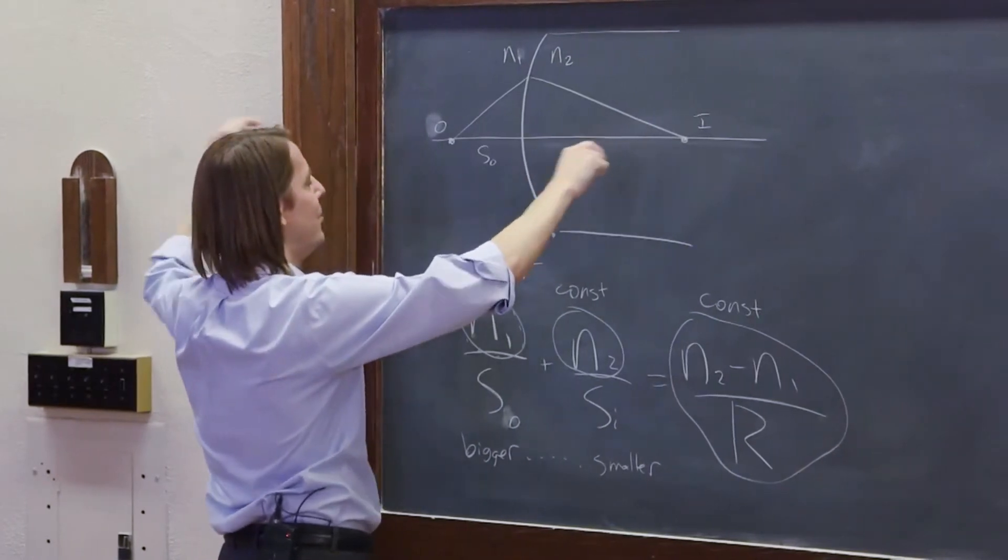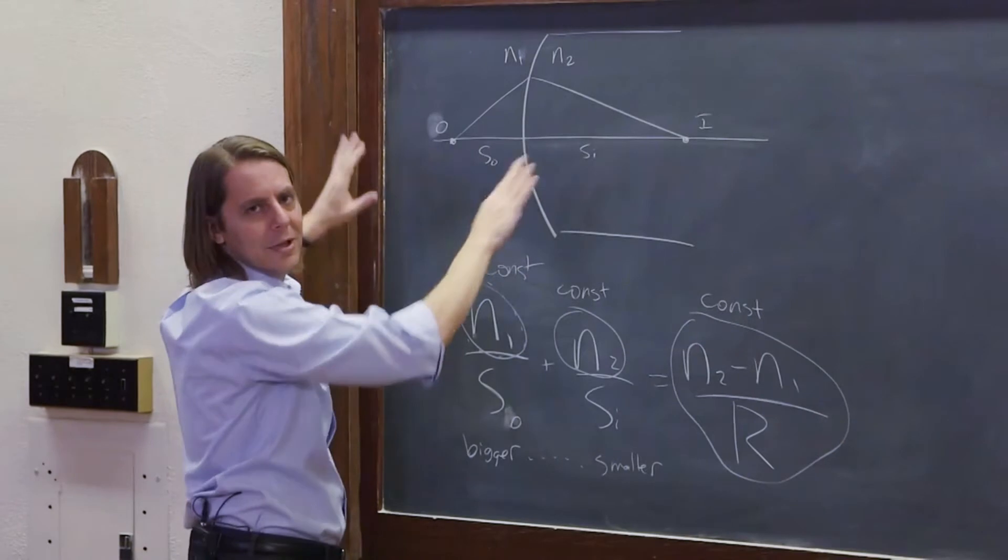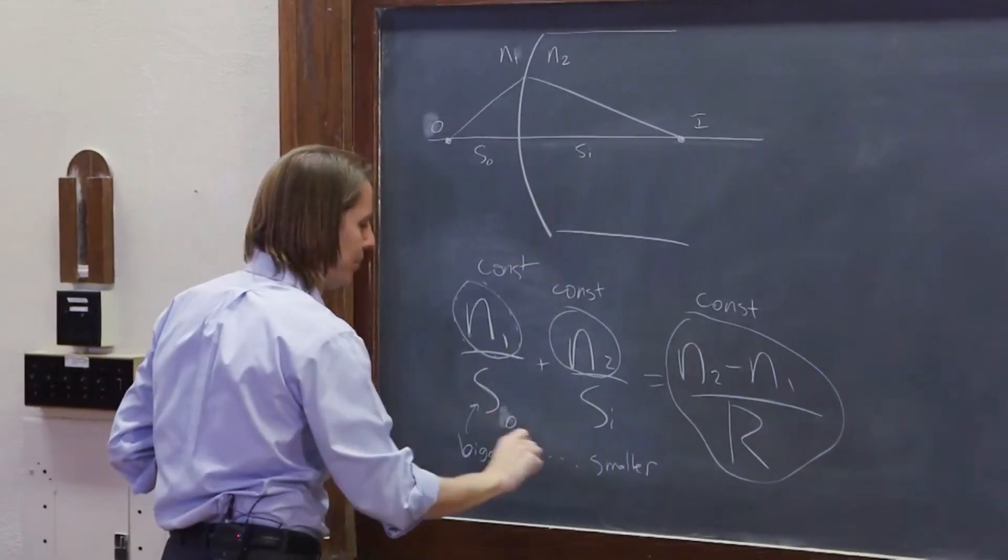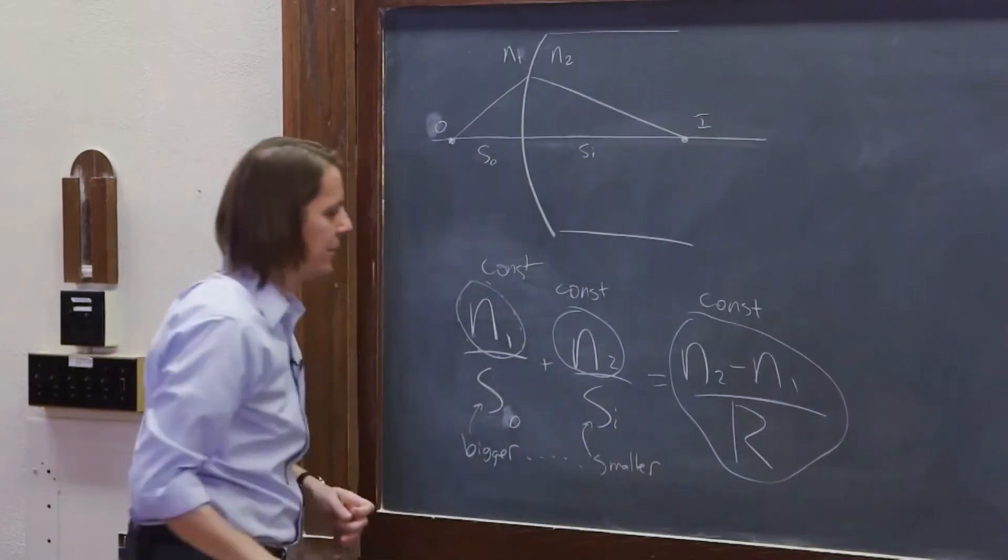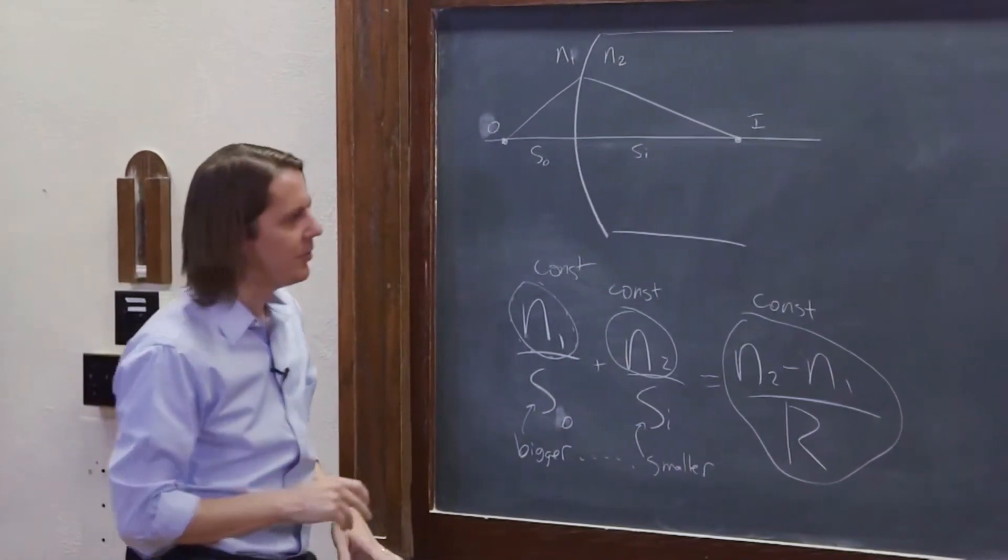So for this simple case, if you just pull it back and forth, this one also moves back and forth. But it's not a linear one-to-one mapping. It depends on this equation. So these bigger and smaller refer to the object and image distance. So that is basically what happens.